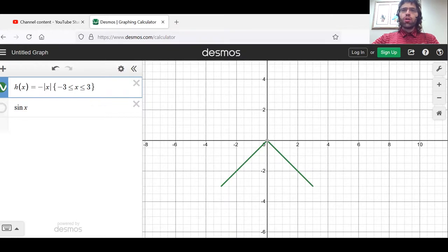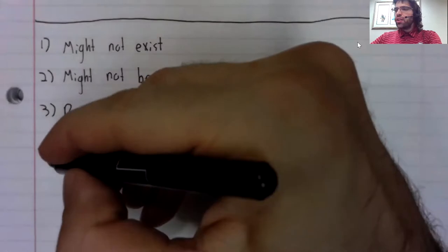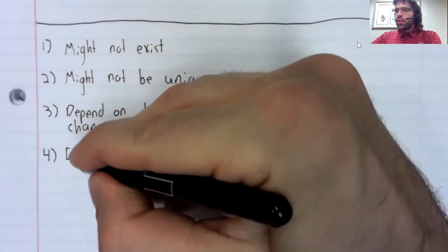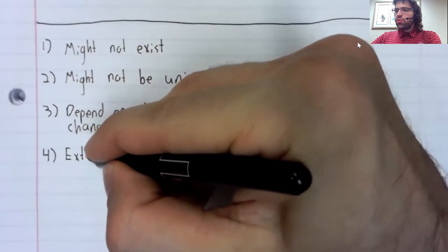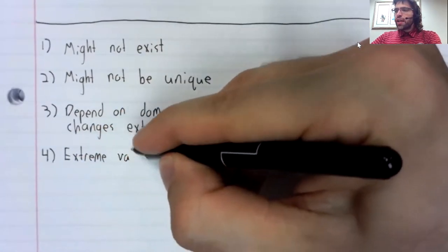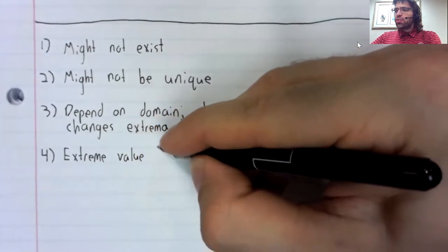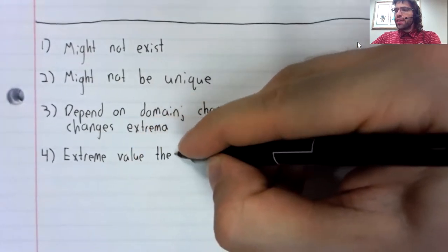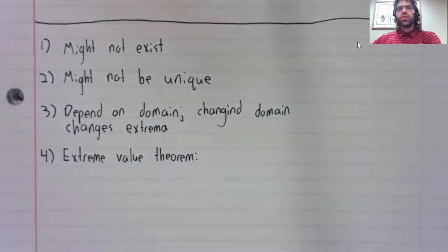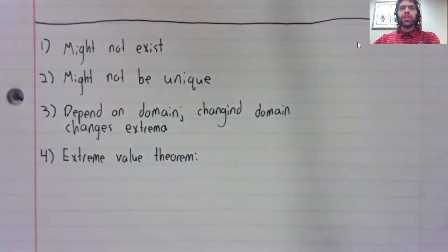And this observation is so special that it gets its own name. It's called the extreme value theorem.